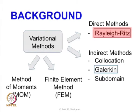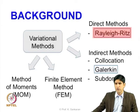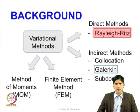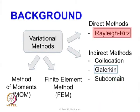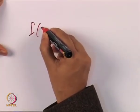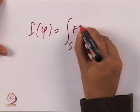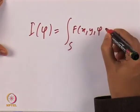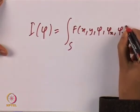The Rayleigh-Ritz method directly starts with the action principle or the functional itself. We do not need to go into all aspects of doing the variation; we directly start with the action principle and derive the solution. Let us say we are interested in a function for which the action principle is given by: I(φ) = ∫∫_S f(x, y, φ, φ_x, φ_y) dS.